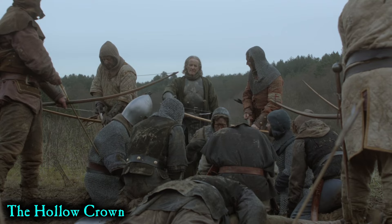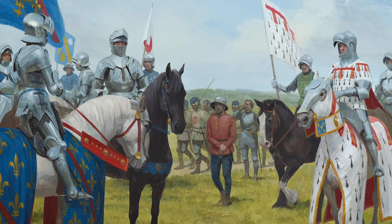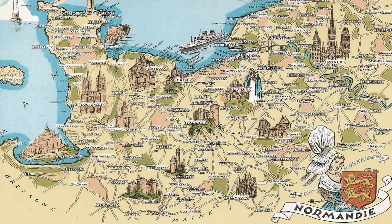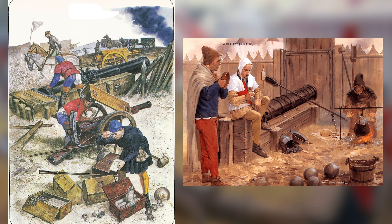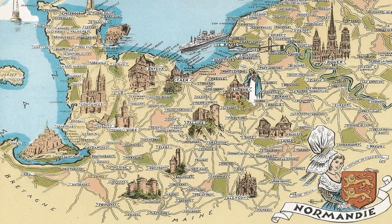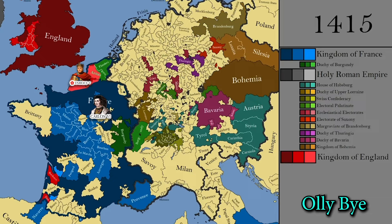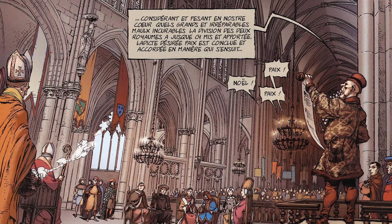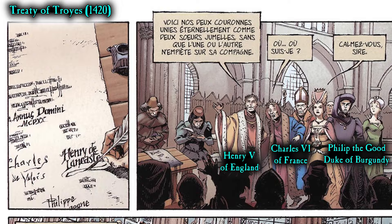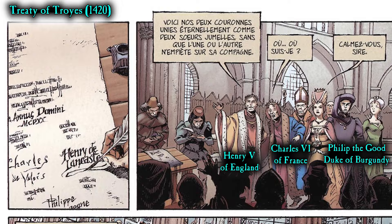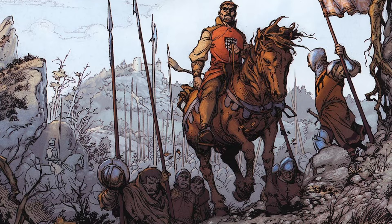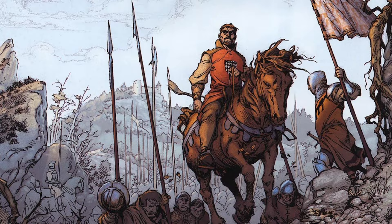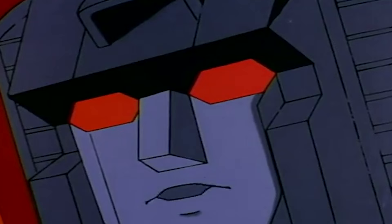After his overwhelming victory at Agincourt, Henry had all the prisoners executed — except the nobles, of course, since he could get some hefty ransoms for them. His next objective was the Norman city of Caen, which surrendered after being sieged and pummeled by English artillery. After that came Rouen in 1419, and with it Henry V took control of all Normandy. By this point the French were in total panic mode. So in 1420, Philip the Good, son and successor of John the Fearless, arranged the Treaty of Troyes, whereby Henry V was recognised as regent and heir to the French throne, as long as both kingdoms maintained their own institutions, customs and laws.